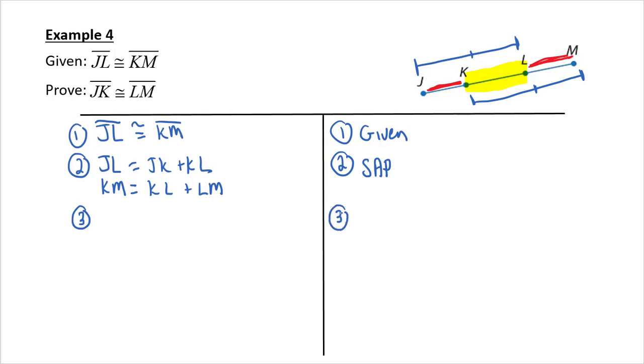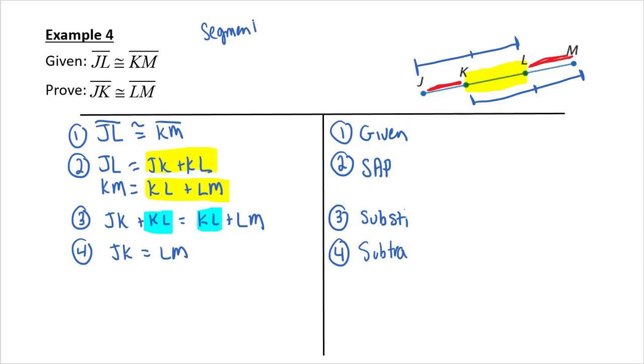Now, for step three, I know JL is congruent to KM. So, I can substitute these right sides in into step one. So, I can say JK plus KL is equal to KL plus LM. And that is substitution. Now, from here, notice what's common. KL is common. So, if I subtract that from both sides, I get what I needed. So, again, this was what I call a segment subtraction proof.